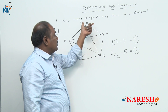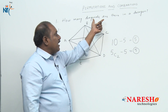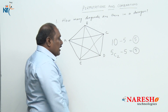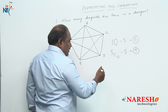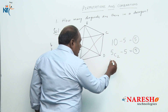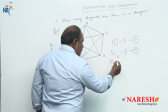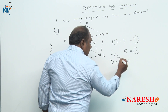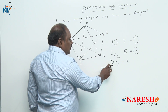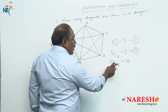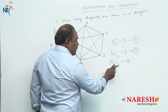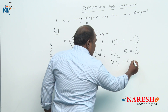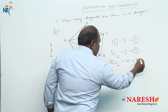Coming to our question: how many diagonals are there in a decagon? A decagon is a polygon with 10 sides, so our answer should be 10C2 minus 10. Now 10C2 = 10×9÷2 = 45. So 45 minus 10 gives us 35. A decagon has 35 diagonals.